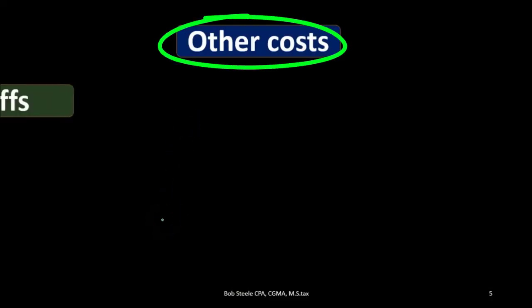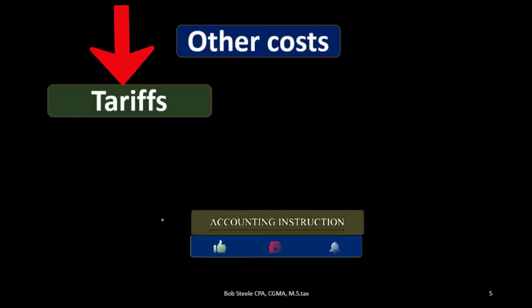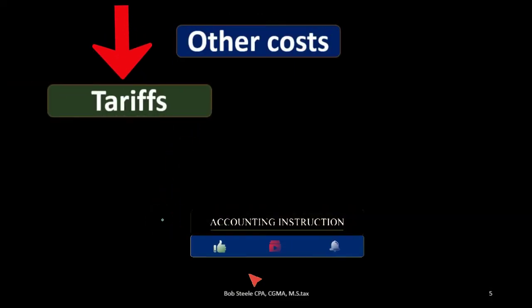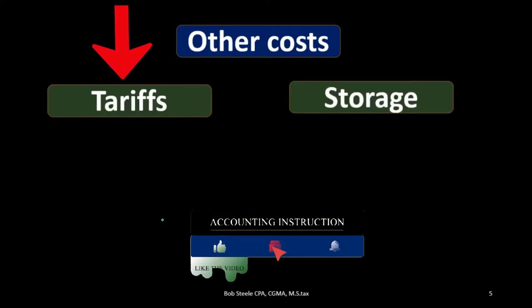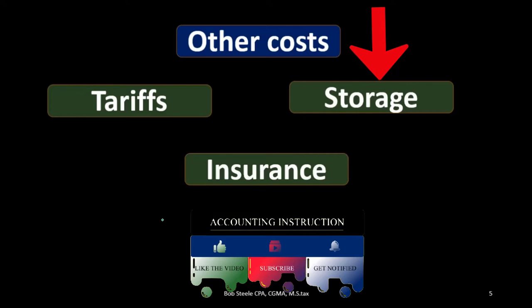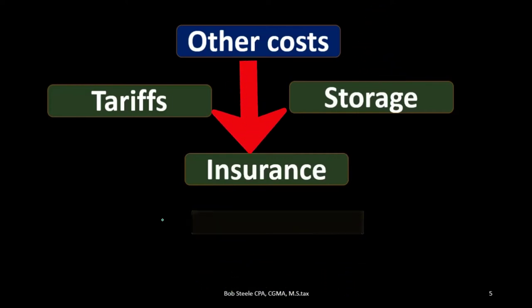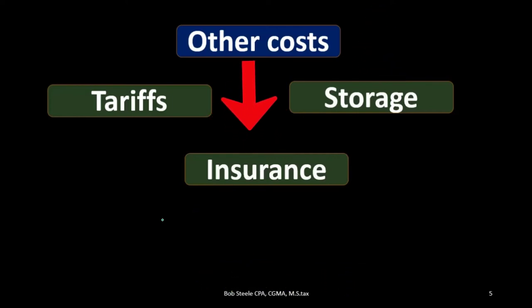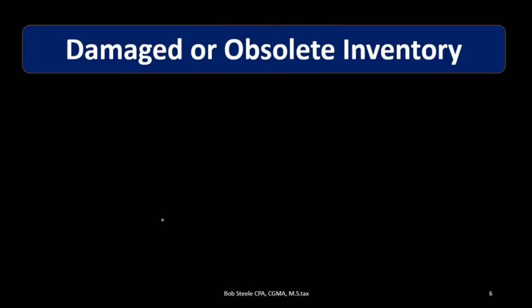Some other costs to consider include tariffs — if tariffs are related to our inventory purchase, they are included in the cost of inventory. Storage costs also help get the inventory ready for the point of sale and are therefore a cost of inventory. Similarly, insurance on the inventory is necessary to acquire and prepare it for sale, making it a cost of inventory as well.